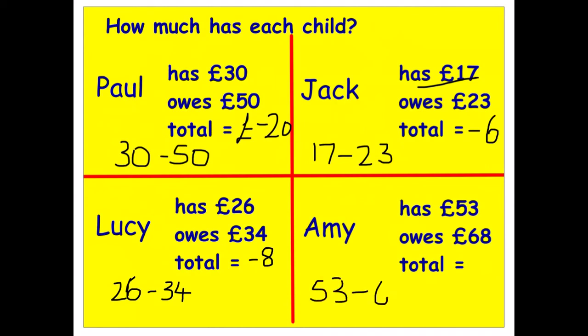Amy has fifty-three pounds but she owes sixty-eight, so we're doing fifty-three minus sixty-eight. Taking away fifty-three puts us on zero, but we still need to take away fifteen more because fifteen plus fifty-three equals sixty-eight, so zero minus fifteen puts Amy down on minus fifteen, or negative fifteen.